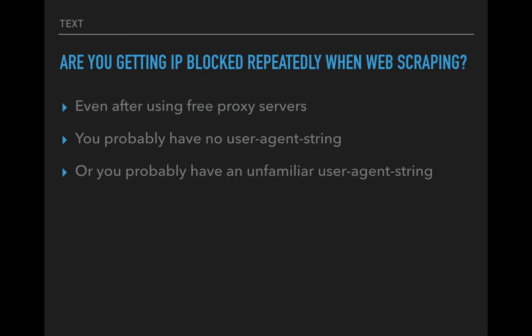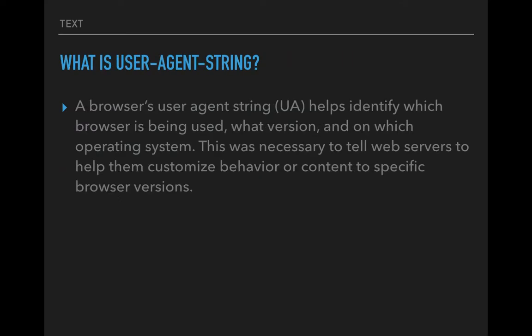So what is a user agent string? A browser typically sends the user agent string — in fact all browsers do — as part of its header request, which is not seen by the user. This header helps identify the browser being used, what version, which operating system, whether it's a phone, tablet, or desktop. Originally this was necessary so web servers could serve content tailored to that particular screen size or browser version.